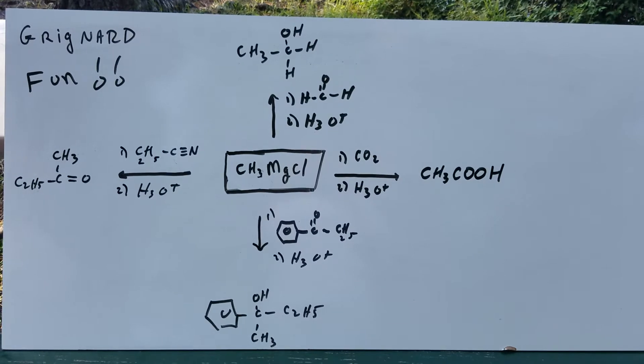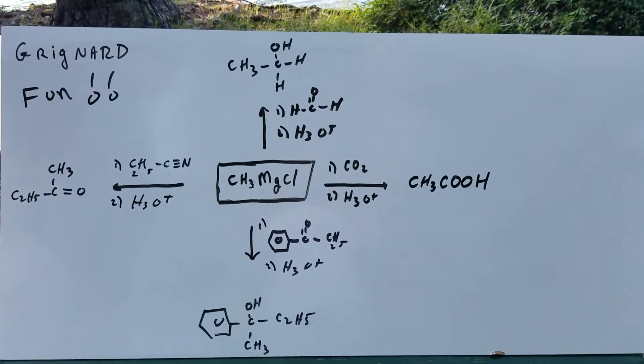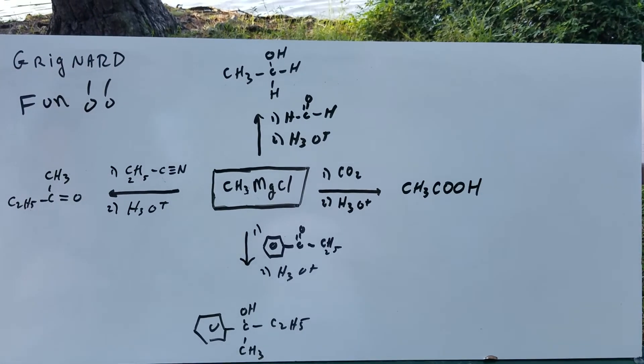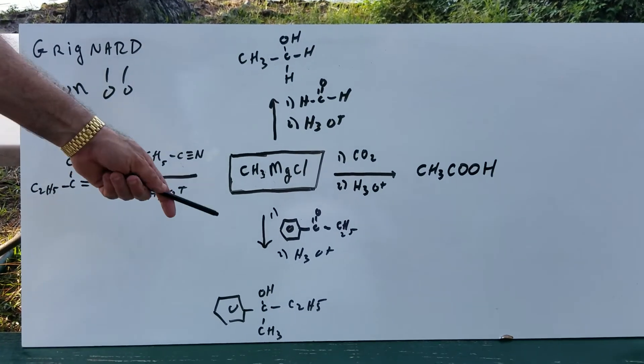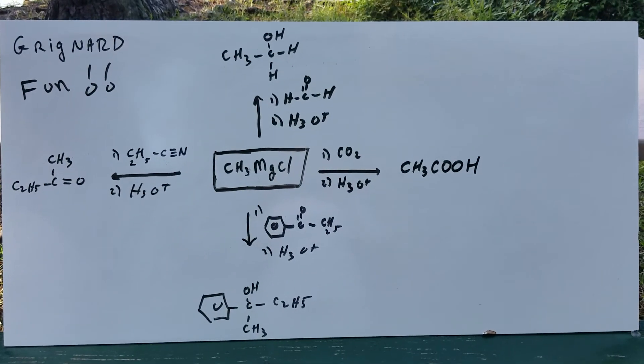I hope that gives you a good idea of some of the reactions done by the Grignard. So Grignards can make things like primary alcohols, acids, secondary alcohols, and even ketones. I hope that gives you a nice review.